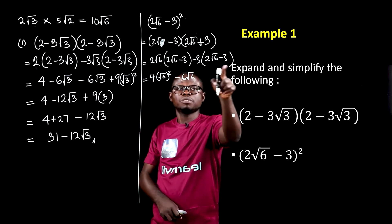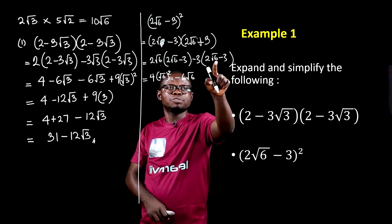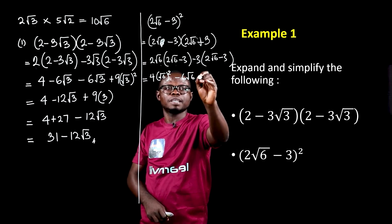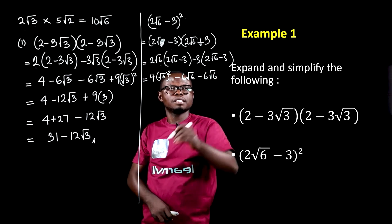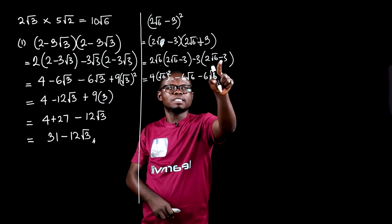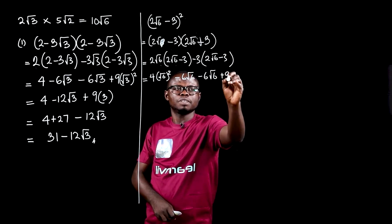Let me come to this part. Minus 3 multiplies 2 root 6, and that's outside, outside, minus 6 root 6. Then, minus 3 times minus 3, we get positive 9.